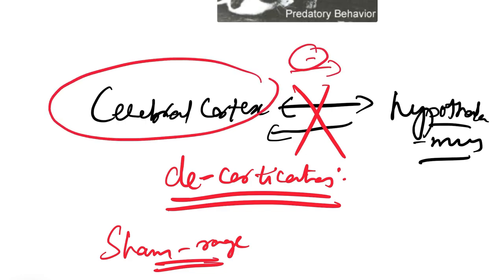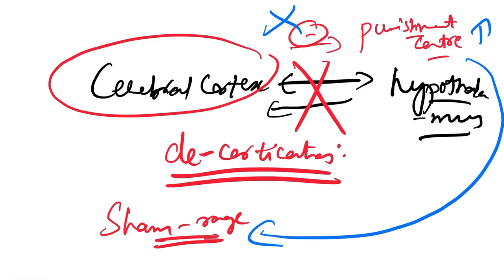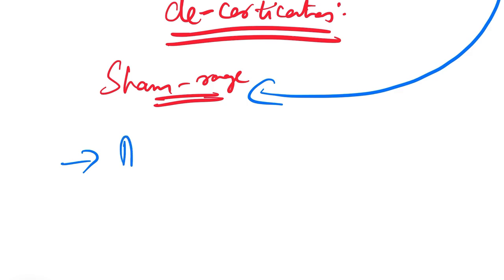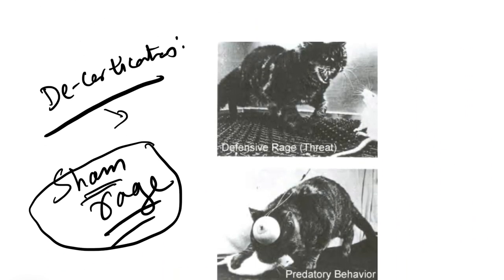The cerebral cortex normally inhibits the hypothalamic punishment center. When there is decortication or removal of this influence, the inhibition is lost, the punishment center becomes stimulated, and a sham rage response occurs. It is called sham rage because the emotions associated with it are absent — it is due to the release of the hypothalamus from cortical control. This type of sham rage can also be abolished by lesioning of the caudal hypothalamus — if you destroy the hypothalamus punishment center, this behavior can be abolished.